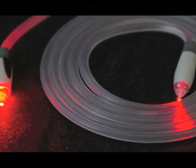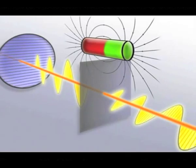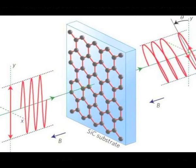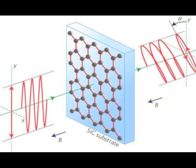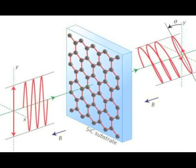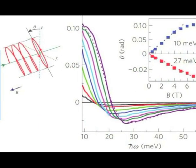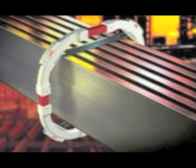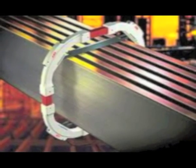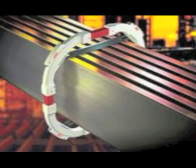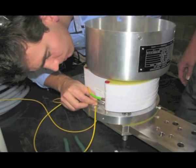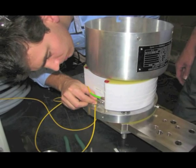Let's look at how optical transformers operate. A light beam undergoes phase changes when passing through a magnetic field produced by the circulation of electric current. This phenomenon is known as the Faraday effect. The application of the Faraday effect through the use of optic fibers wrapped around high voltage conductors enabled the development of current meters known as optical transformers.